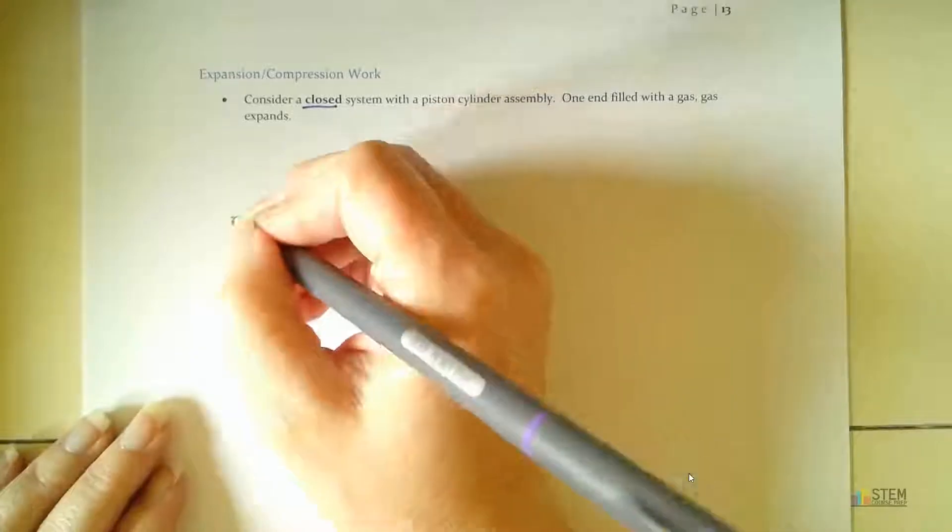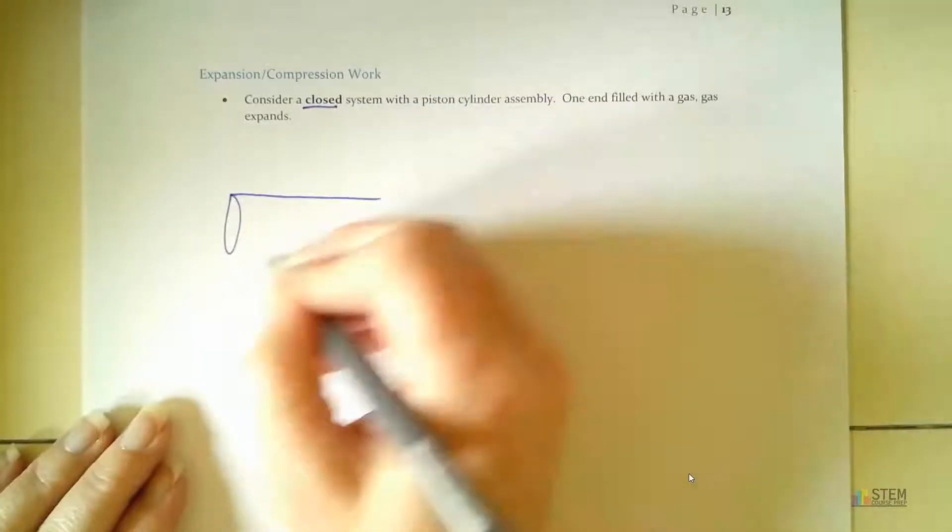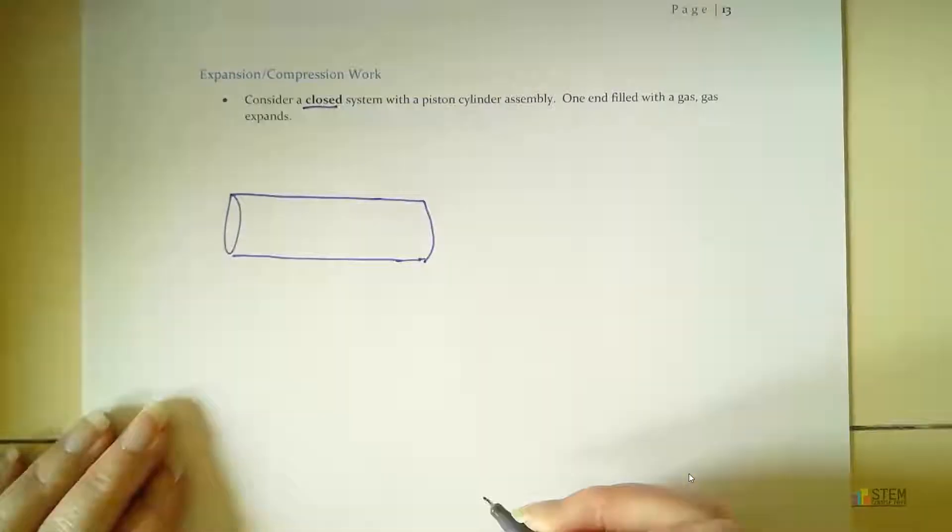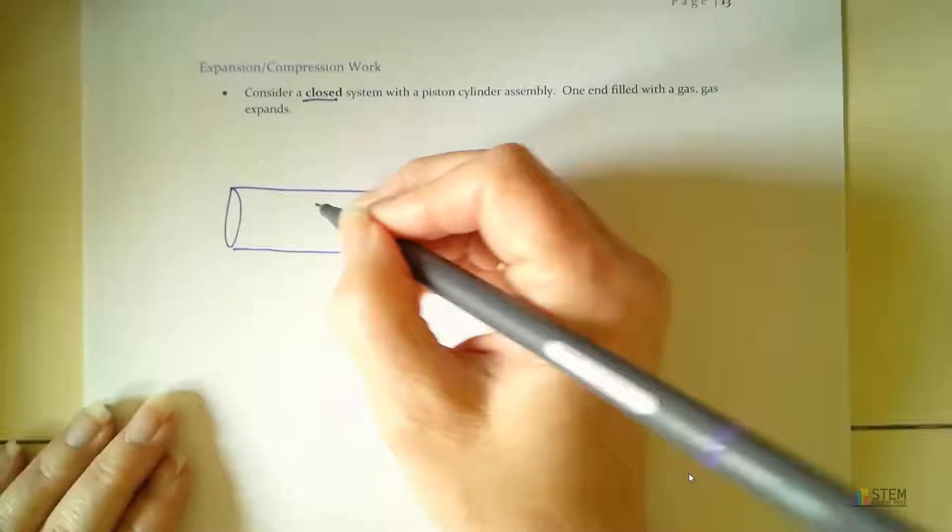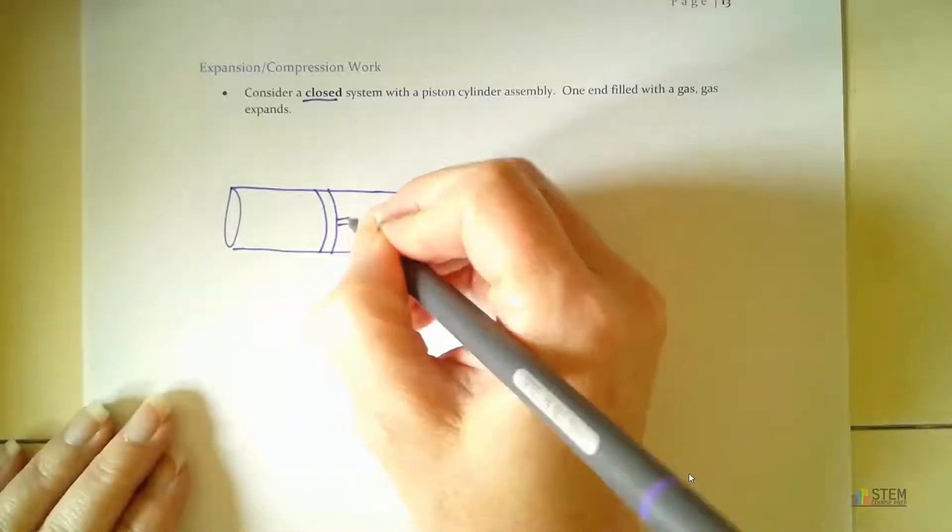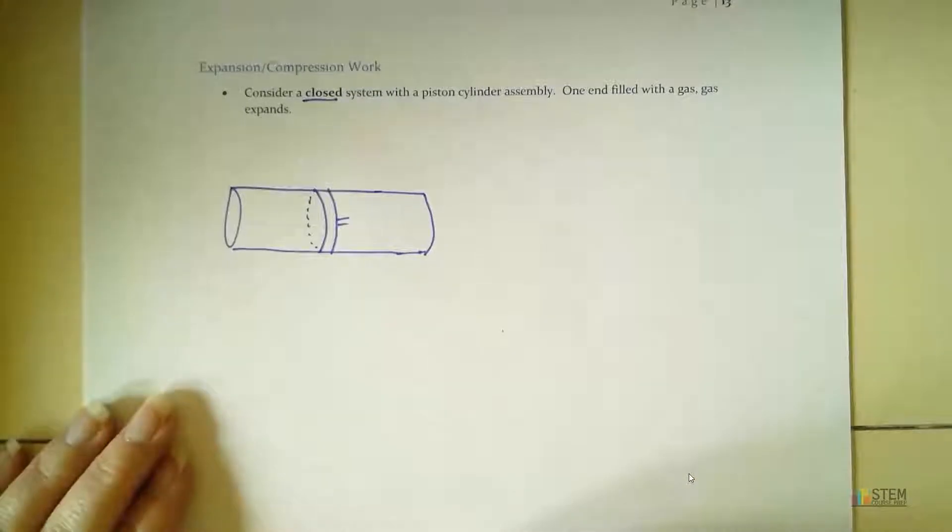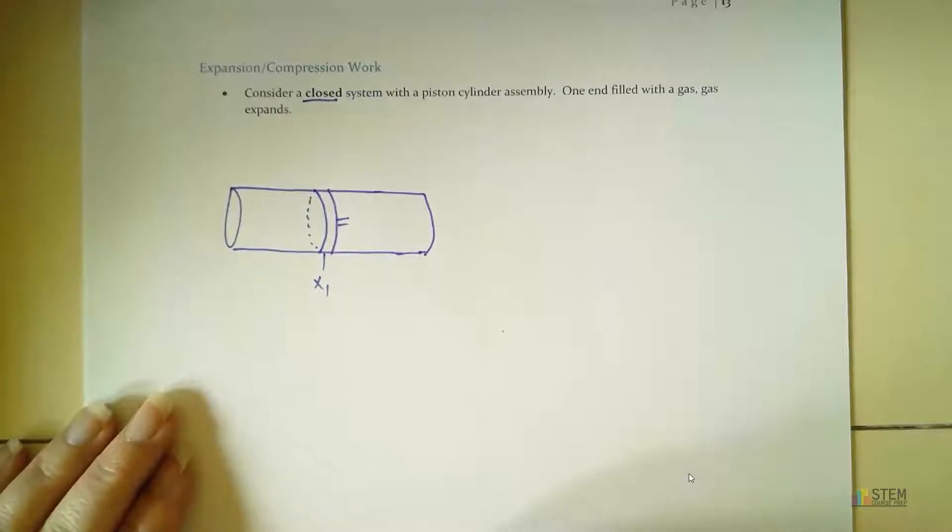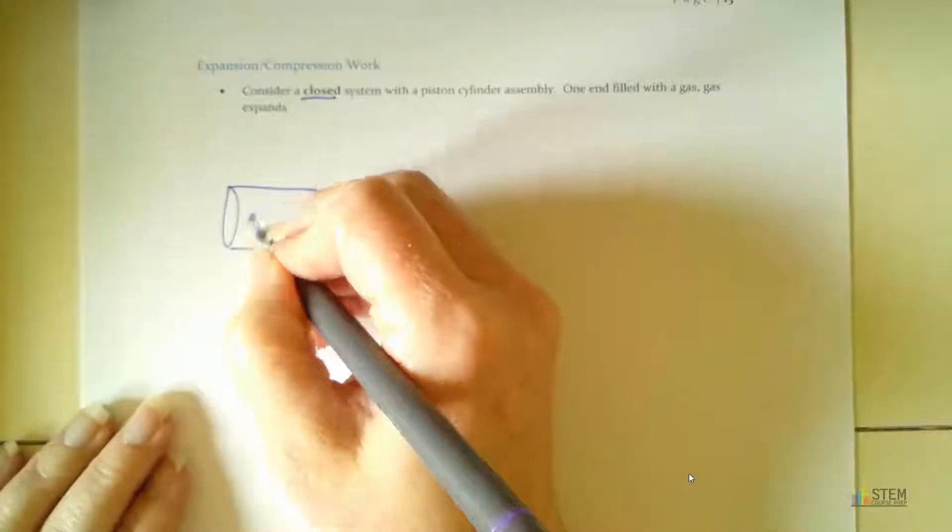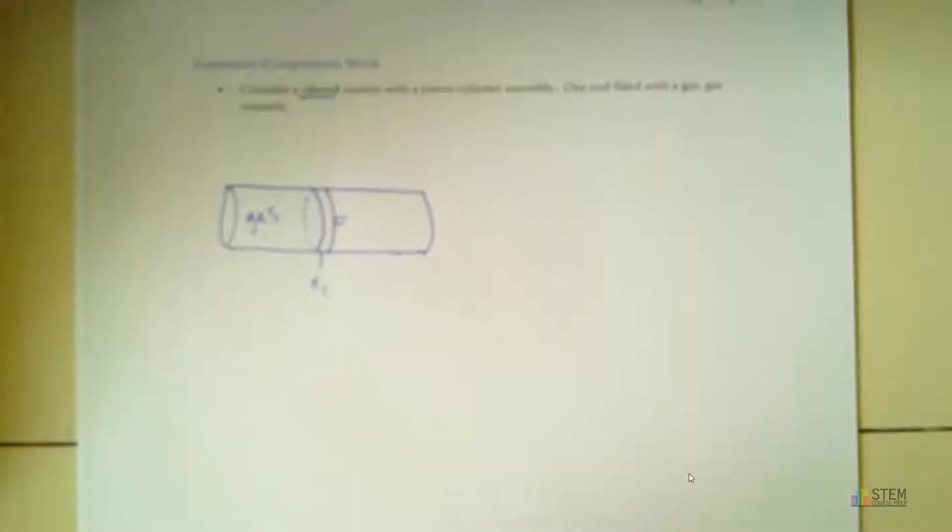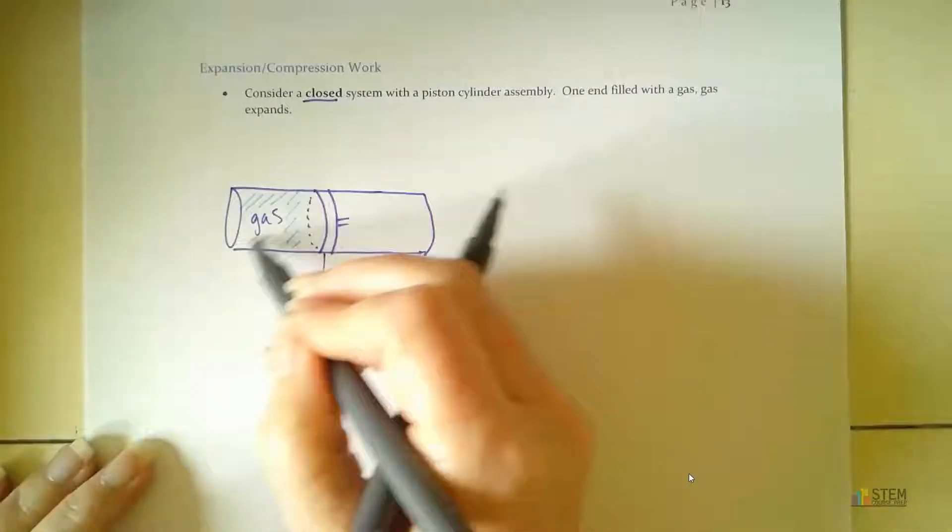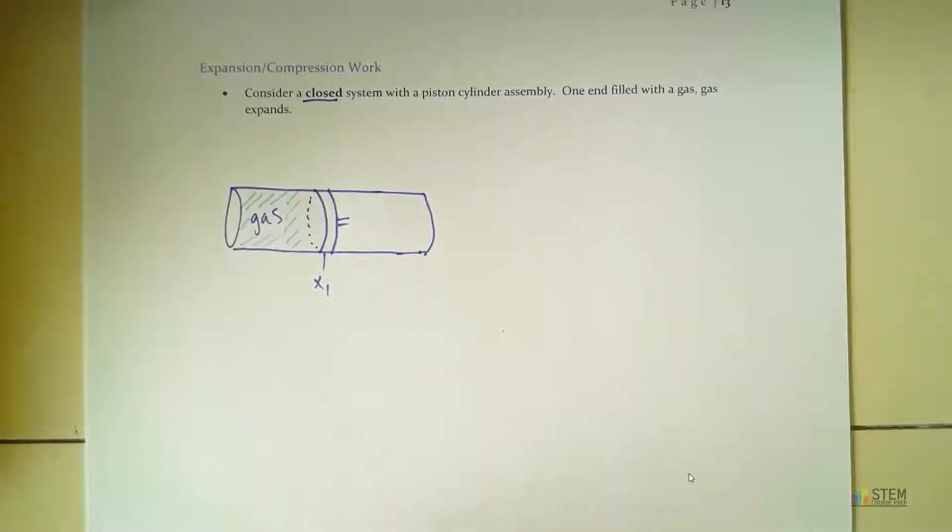So let's draw a picture here. All right. So there's my cylinder. And I'm going to have a piston in here like that. And this is where it's going to start out. So let's just call this X1. So that's my initial position. I've got a gas in here. Stay focused, guys. There we go. So I've got a gas in here like that.